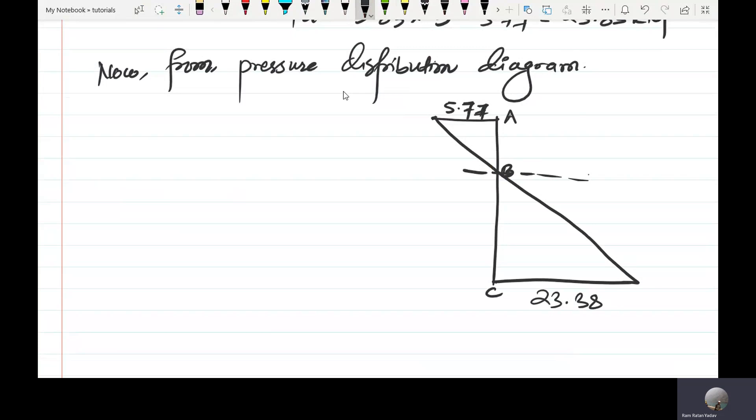At point B where P is equal to 0, we have 5.83z minus 5.77 equals 0. Z equals 0.99 meter, which is the point of contraflexure.